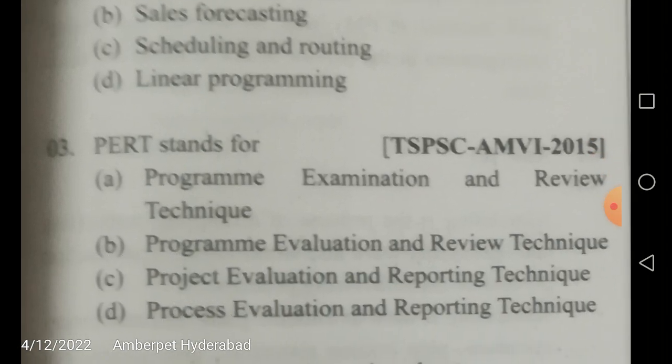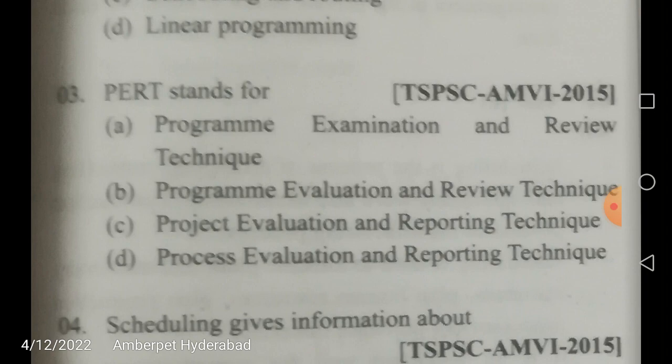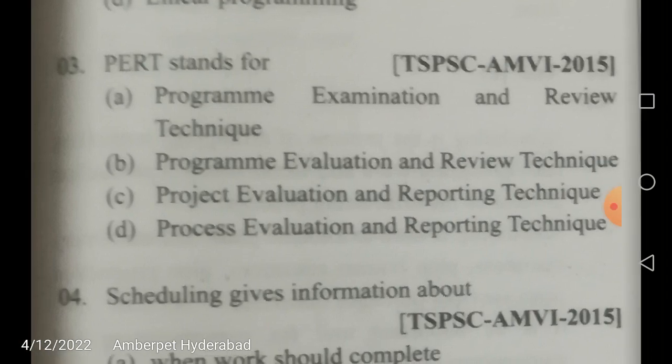CPM stands for Critical Path Method. PERT and CPM are related to projects and their time estimates — including normal time, standard time, and optimistic, pessimistic, and most probable times. Three time estimates are considered for calculating the mean time. PERT stands for Program Evaluation and Review Technique.